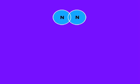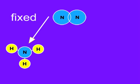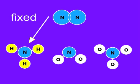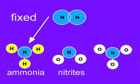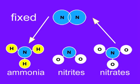Instead, it gets fixed or converted into usable forms of nitrogen compounds like ammonia, nitrites, and nitrates. Eventually, it is returned to the atmosphere as nitrogen gas in a never-ending cycle.